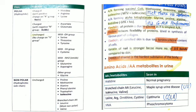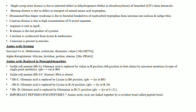Maple syrup urine disease is associated with an inherited defect in dehydrogenase of the branched-chain keto acids of leucine, isoleucine, and valine. Hartnup disease is associated with a tryptophan defect. Blue diaper syndrome is associated with the breakdown of unabsorbed tryptophan. Canavan disease is associated with N-acetyl aspartate.